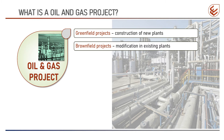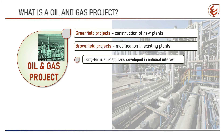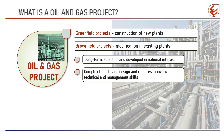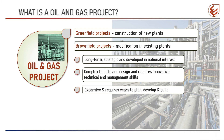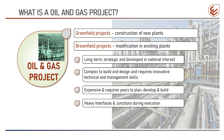Let's see some salient features of oil and gas projects. These projects are long-term, strategic, and always developed in national interest. Typically, the lifespan of an oil and gas project is around 20 to 30 years. These projects are complex to build and design, and to complete them successfully requires innovative technical and project management skills. Oil and gas projects are always expensive and require several years to plan, develop, and build. As seen in the last video, oil and gas projects involve several vendors, specialized consultants, many material suppliers, and a number of subcontractors. Therefore, there are heavy interfaces and junctions with external parties as well as within internal departments of the owner and the contractors.